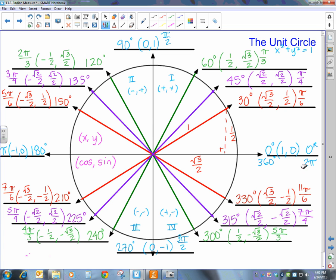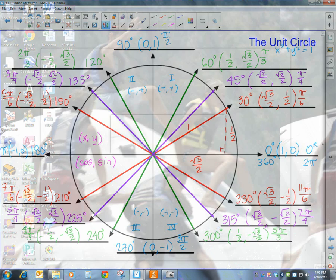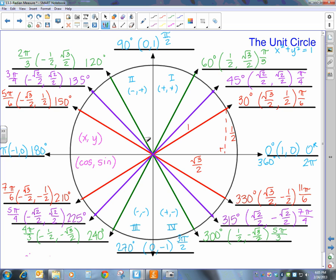So now we have all of our radian measures on our circle. And we can refer back to it when we go and calculate the values like we're fixing to do in the next page.